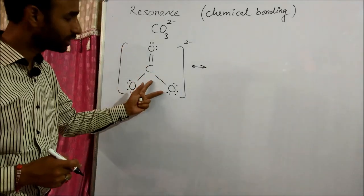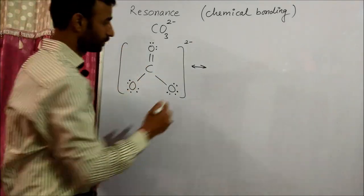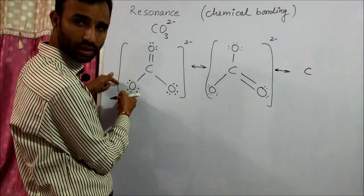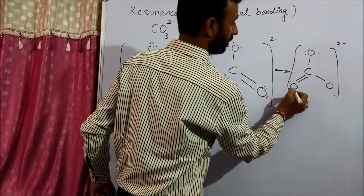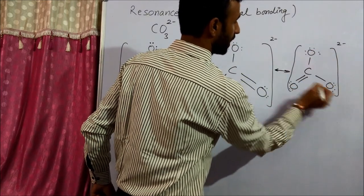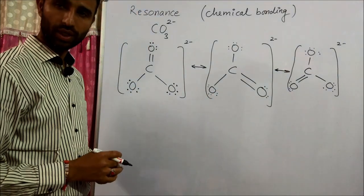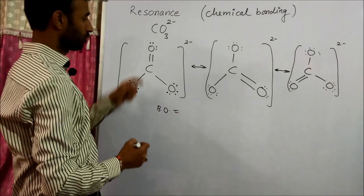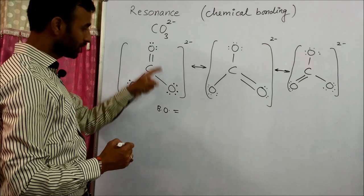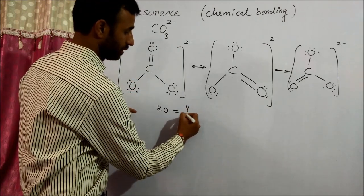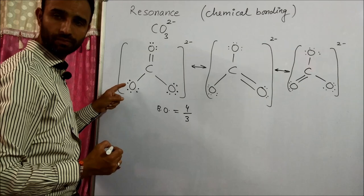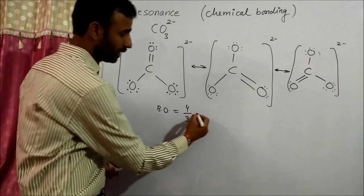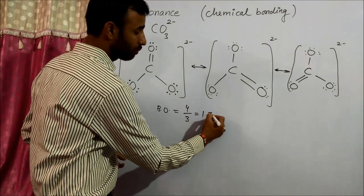Resonating structures are shown with a double-headed arrow between them. That means this double bond can be placed here — and it can also be written with the double bond on the left side. So these are the resonating structures of carbonate. Bond order is equal to the total number of bonds divided by the number of positions. So bond order comes out to be 4 divided by 3, which is 1.33.